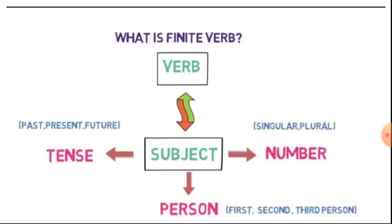Here verb changes according to subject, according to subject number, person, and tense. You know number can be singular or plural, and person can be first person, second person, or third person. And tense may be any tense: past tense, present tense, or future tense.